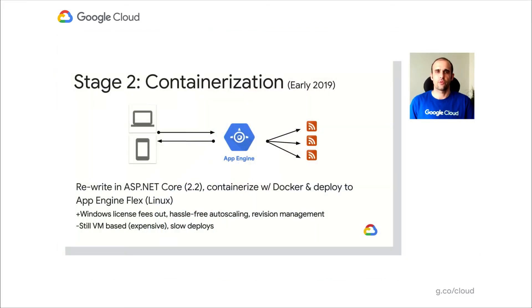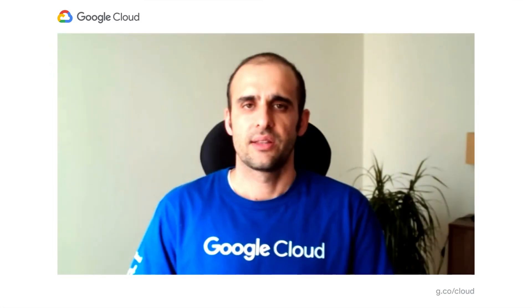But we were still running on virtual machines. App Engine does a good job of hiding that fact, but behind the scenes, on App Engine Flex, you are running on virtual machines and you need to pay for those virtual machines per second. This meant that our application, when it was not used — especially during the evenings — we were still paying for those VMs at all times.